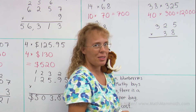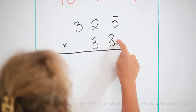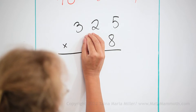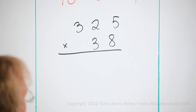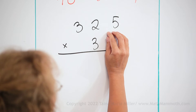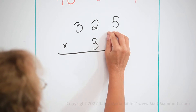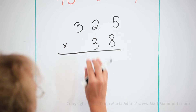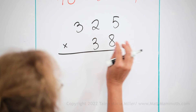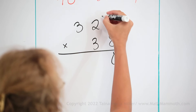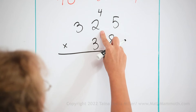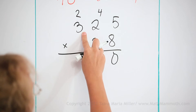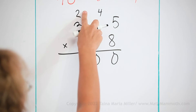Now write the longer number on top. We do the same thing — I will first multiply 8 times 325, ignoring the 3. So 8 times 5 is 40, 8 times 2 is 16 plus 4 is 20, and then 8 times 3 is 24 plus 2 is 26.